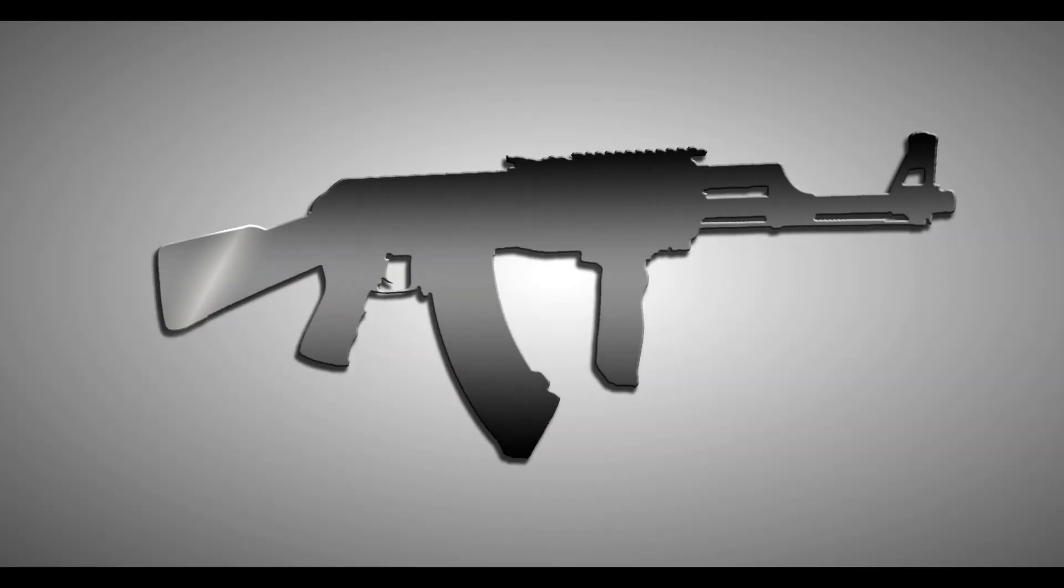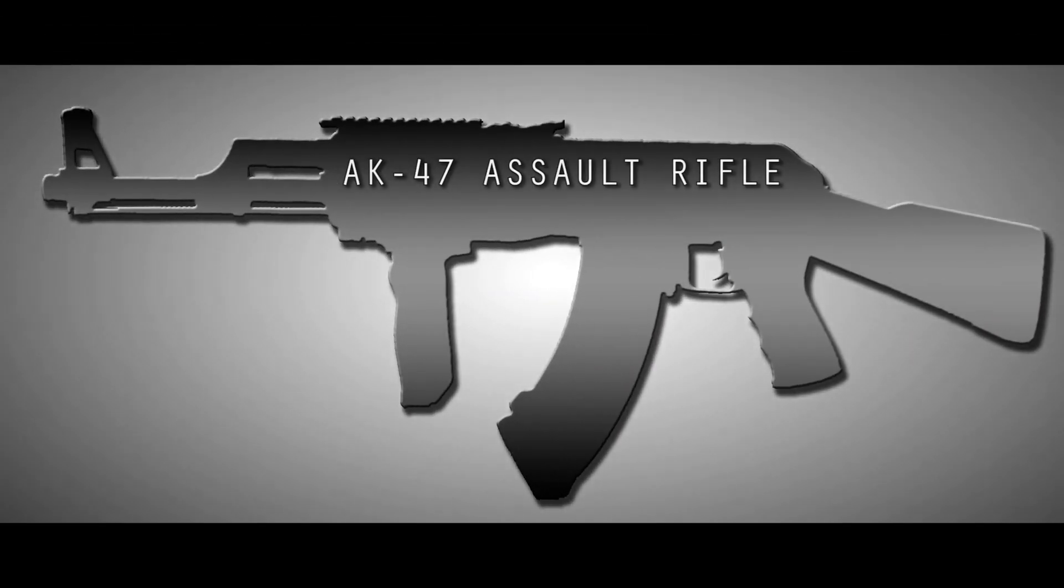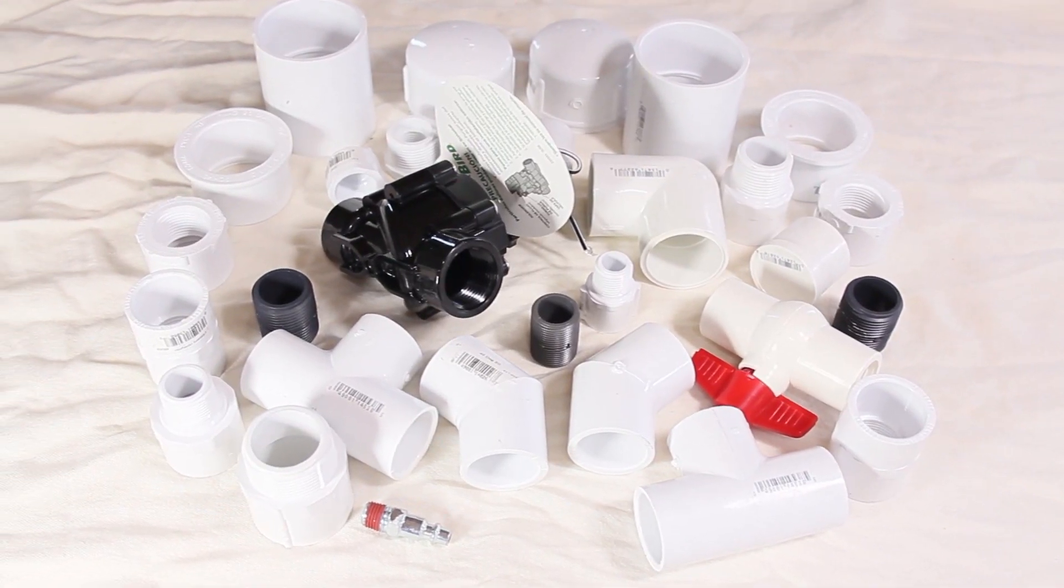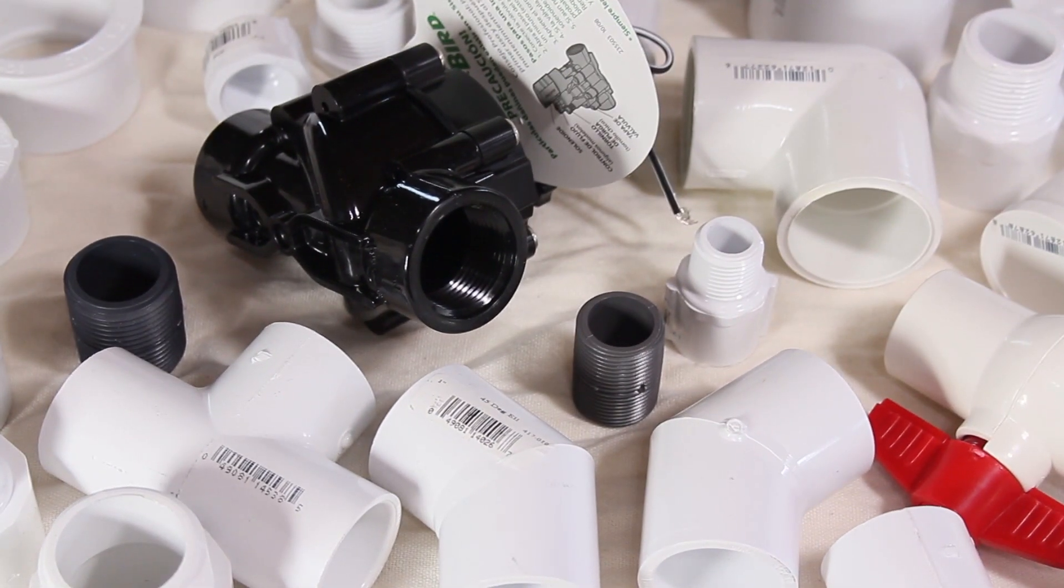For this project I based my design on the style of an AK-47 assault rifle. I rounded up these PVC sprinkler parts for about $45 at a local hardware store.